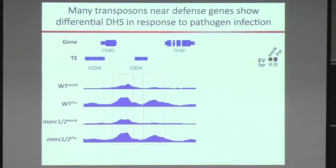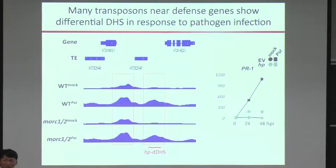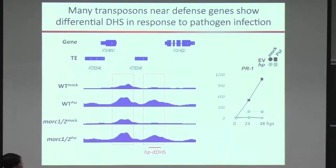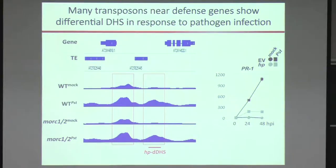One example is the gene PR1, a very well-characterized marker gene in Arabidopsis. You can see that in the promoter area, there is differential chromatin accessibility between mock and pseudomonas-treated plants. What was unexpected was another area following the same pattern — but the sequence present there was a transposable element. We decided to look at what would happen if we silenced this particular area using a hairpin loop construct made transgenic. We found that PR1 inducibility significantly dropped, suggesting this TE-associated region functions as an enhancer affecting PR1.